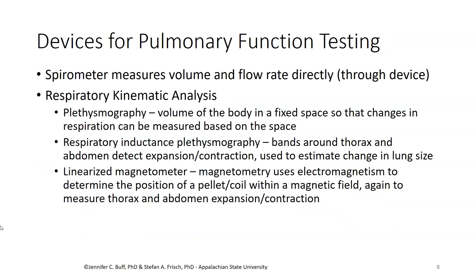Pulmonary function testing is carried out with a variety of devices. A spirometer is the one typically used for the forced vital capacity procedure. It can measure volume and flow rate directly, basically by exhaling and inhaling through the device. Additional measures for pulmonary function testing can look at different dimensions where respiration happens — for example, the chest versus the abdominal use of respiratory muscles during respiration, which would be evaluated by respiratory kinematic analysis.